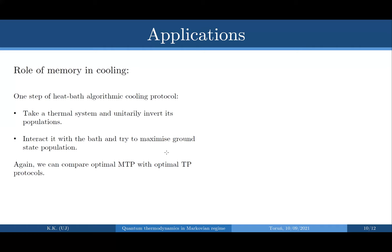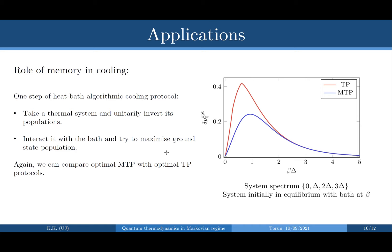Another application is algorithmic heat bath cooling. You start with a four-level system in thermal equilibrium with the bath. You first perform a unitary that inverts the populations, then couple it to the bath and try to increase the ground-state occupation as much as possible. On the x-axis we have different temperatures of the bath; on the y-axis we see how much the ground-state occupation can increase in one round of such a protocol. Again we see a big improvement when using thermal processes compared to Markovian thermal processes, optimized over all possible protocols in both cases.